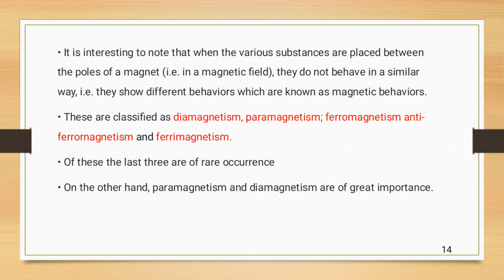These magnetic behaviors are classified as diamagnetism, paramagnetism, ferromagnetism, antiferromagnetism or ferrimagnetism. Last three like ferromagnetism, antiferromagnetism and ferrimagnetism, these are less common or rare occurrence. On the other hand, paramagnetism and diamagnetism are of great importance and are very common.